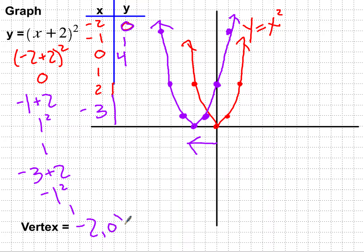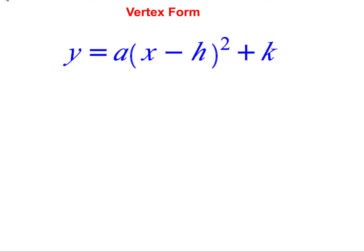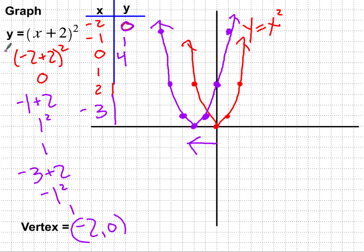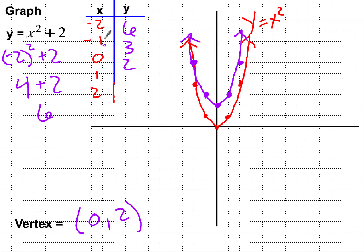We can use vertex form, also known as h-k form — we've seen this with absolute value functions. The h and k give us our vertex, and the vertex is always at negative h, k. So a plus two inside the parentheses means the vertex shifts to negative two, not positive two. For the outside value, such as plus two, that k stays as positive two for the vertex.